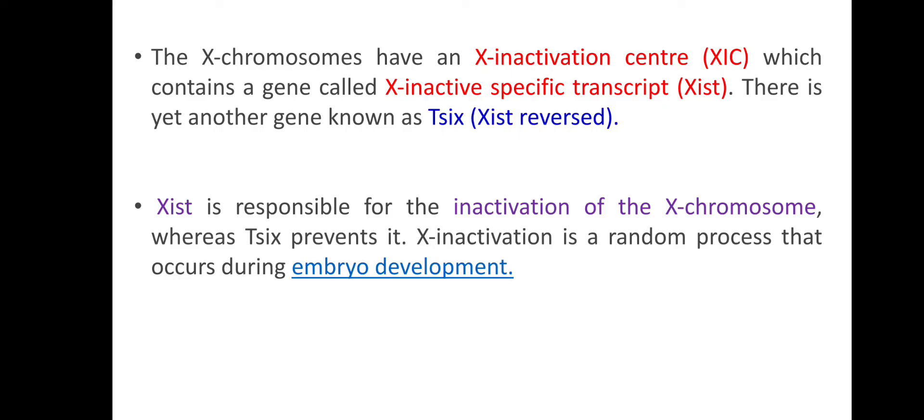The X chromosome inactivation is helped by specific genes. The X Inactivation Centre, or XIC, is responsible for this process. XIC contains two key genes: the X Inactive Specific Transcript (XIST) gene and its reverse counterpart (TSIX). XIST is the gene responsible for X chromosome inactivation.